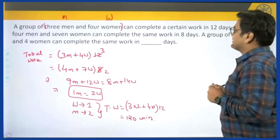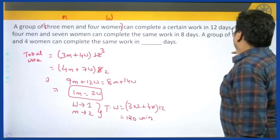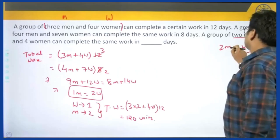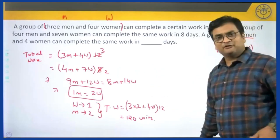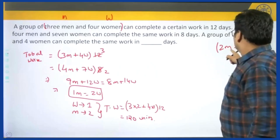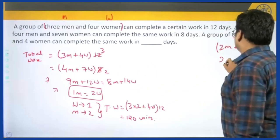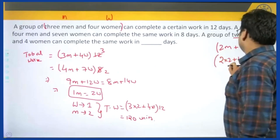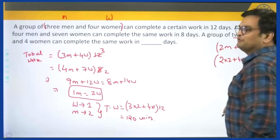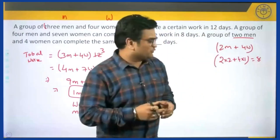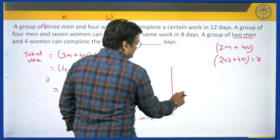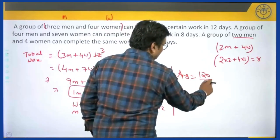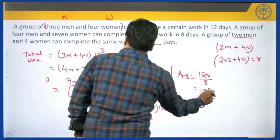Total work using the first group: (3 men + 4 women) × 12 days = (3×2 + 4×1) × 12 = (6 + 4) × 12 = 10 × 12 = 120 units. Now the question asks: a group of 2 men and 4 women can complete the same 120 units in how many days? Combined efficiency = 2 men + 4 women = 2×2 + 4×1 = 4 + 4 = 8 units per day. Number of days = 120 ÷ 8 = 15 days.